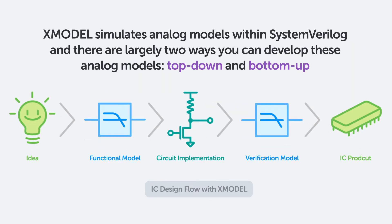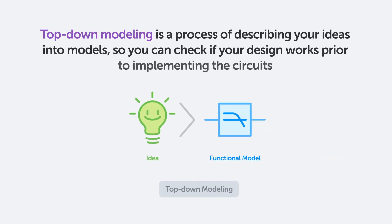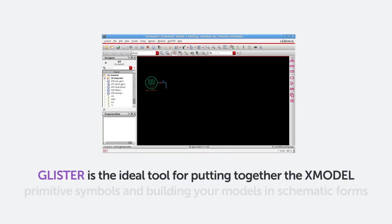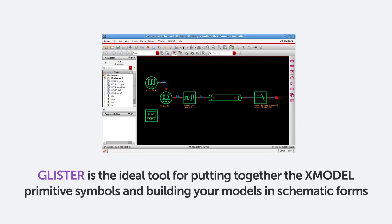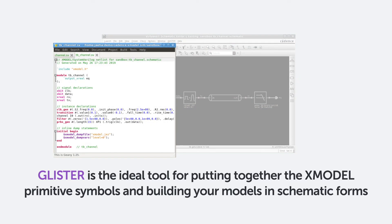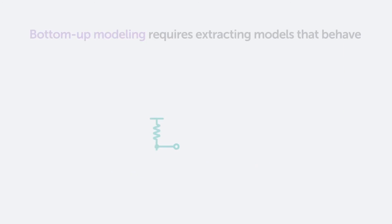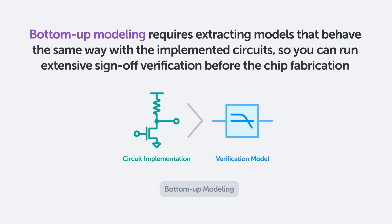Xmodel simulates analog models within SystemVerilog, and there are largely two ways you can develop these analog models: top-down and bottom-up. Top-down modeling is a process of describing your ideas into models, so you can check if your design works prior to implementing the circuits. Glister is the ideal tool for putting together the Xmodel primitive symbols and building your models in schematic form.